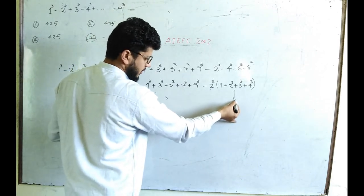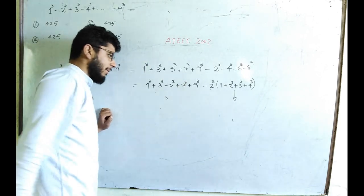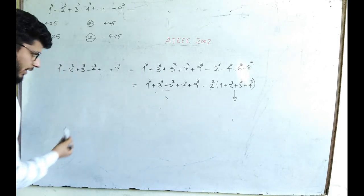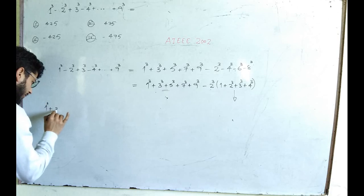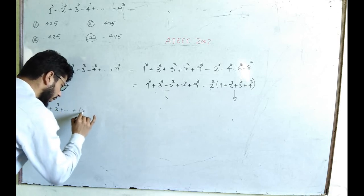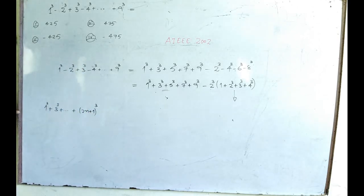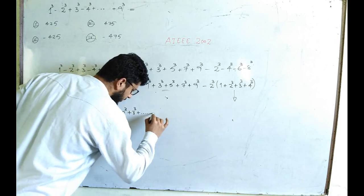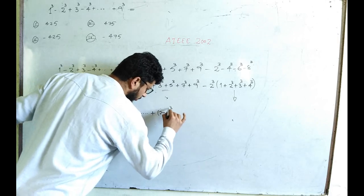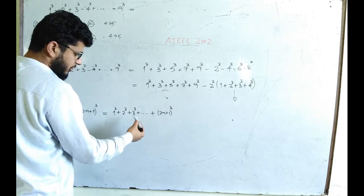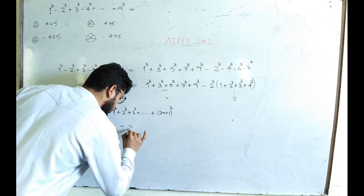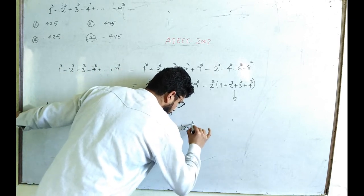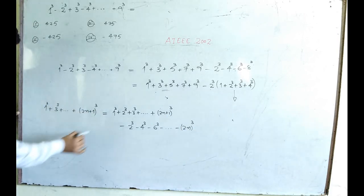The even part is easy — it is the sum of cubes of natural numbers, for which we know the formula. But for the odd cubes part, you need to work a little harder. Let me derive the formula for the sum of odd cubes. Starting with 1 cube plus 3 cube plus so on up to 2n+1 cube, I subtract from the sum of all naturals the even cubes: 2 cube, 4 cube, 6 cube, up to 2n cube.